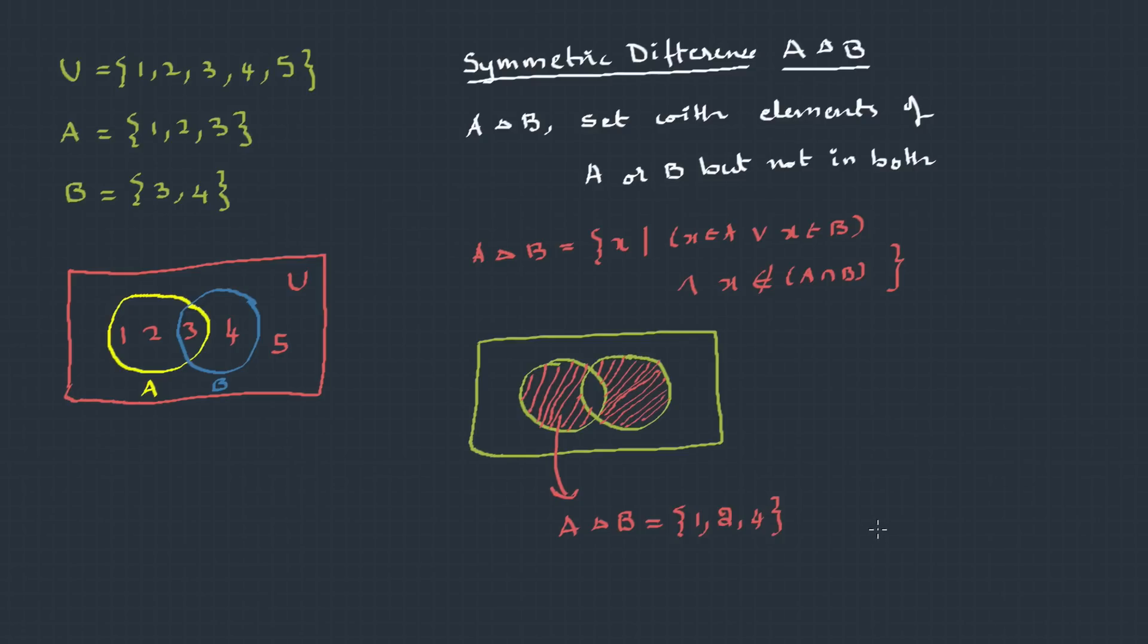So these are the basic set operations. When we have two sets A and B, using any of the operations like union, intersection, difference, complement or symmetric difference, we get a new set of elements.